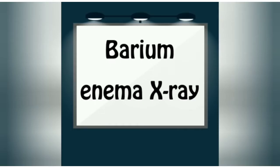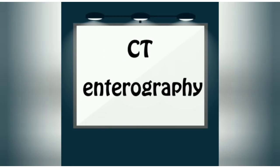Barium enema x-ray is used to examine the lower intestinal tract. Barium is introduced through the rectum as an enema and x-ray imaging is done. In case of a perforated colon, both colonoscopy and sigmoidoscopy pose a potential threat. In such cases, barium enema x-ray is done to safely rule out any complications like perforation.